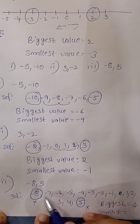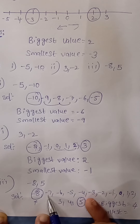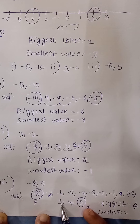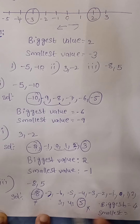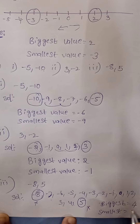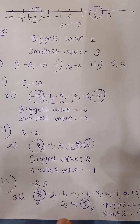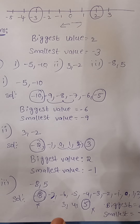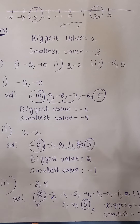For the smallest value, looking at the negative integers: minus 7 is on the left side of all these numbers, so minus 7 is the smallest value. Children, remember — whichever number is on the right side is always the biggest value, and whichever number is on the left side is always the smallest value. Thank you!